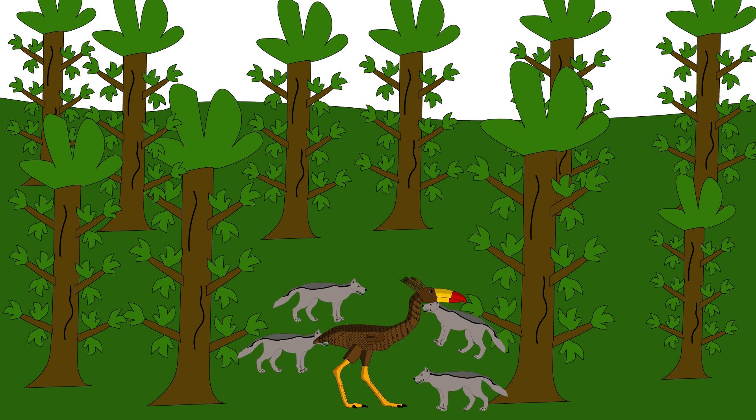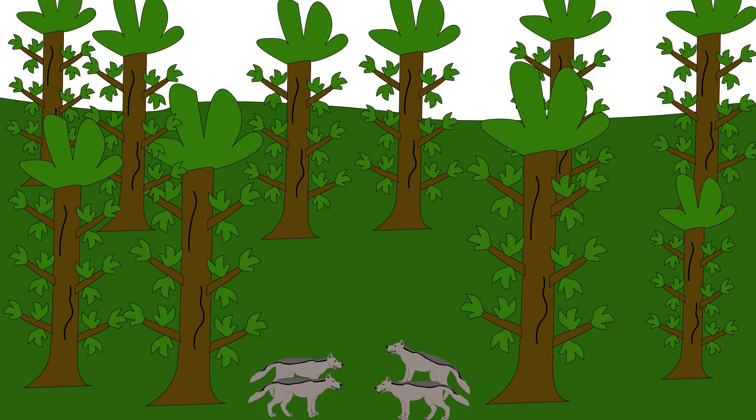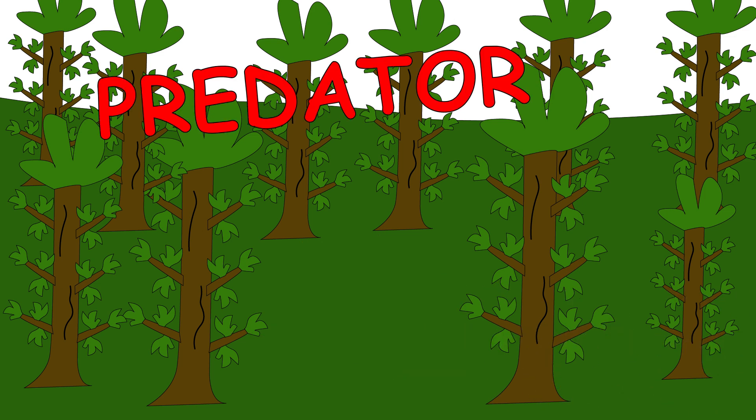You try to ambush a pack of dire wolves and realize, too late, they've circled you. You get out, but not without a limp. You've lost a step. In this world, one step can be the difference between predator and prey.